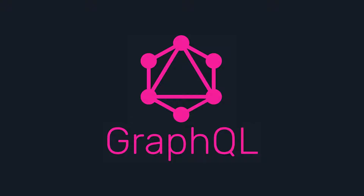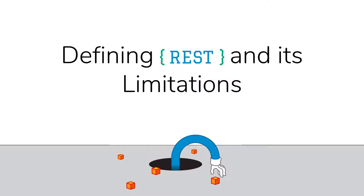We'll discuss a little bit of history, what issues REST suffers from, and what GraphQL does differently. REST, or Representational State Transfer, is an API design architecture developed to extend and, in many cases, replace older architectural standards. Objects in REST are defined as addressable URIs, and are typically interacted with using the built-in verbs of HTTP.